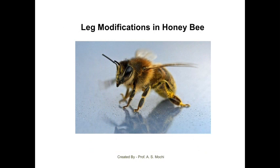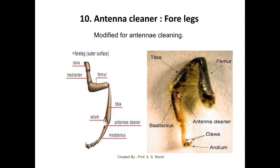The next, and most important, is the leg modification in case of honey bee, where all three pairs of legs are modified for a special purpose. The front legs of the honey bee are modified as an antenna cleaner. When the honey bee visits different flowers, the front legs are used for cleaning the antenna — to remove nectar, pollen, and other material from the antenna. Hence known as the antenna cleaner.